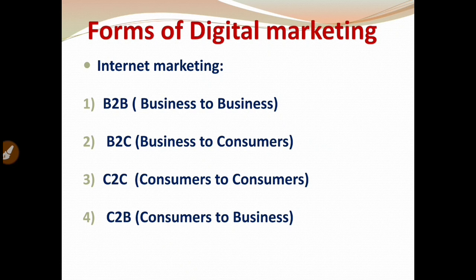Now we need to look at the different forms of digital marketing. Number one is internet marketing. Internet marketing is nothing but online marketing. Online marketing is done via the worldwide web. A good example is Alibaba.com, which is a global platform for wholesale trade.